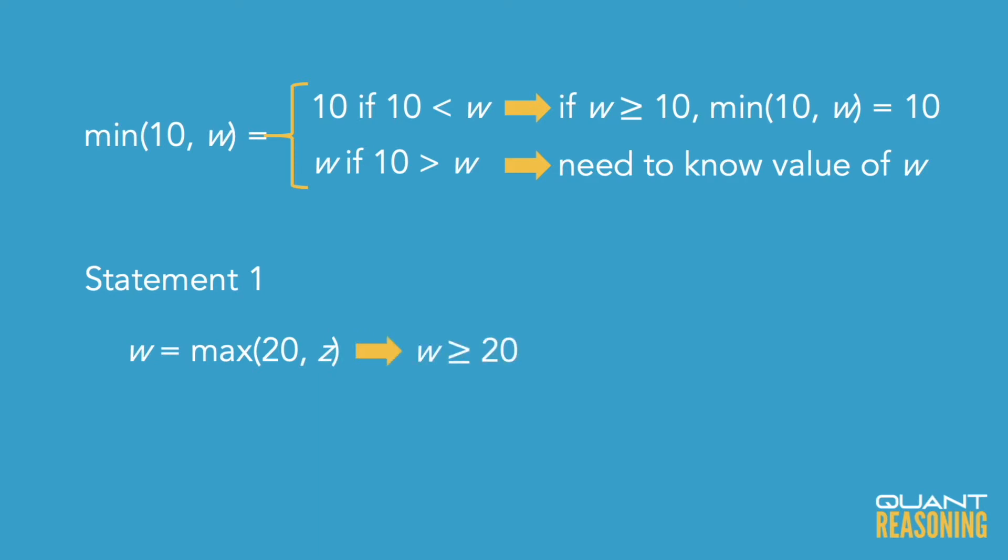And if w is at least 20, then who's smaller, 10 or w? 10. So statement one is sufficient on its own because it allows us to infer that the value of the minimum between 10 and w is 10.